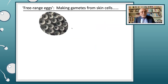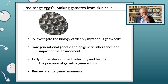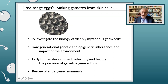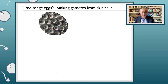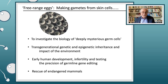So let's think about what we can call 'free range eggs' — say we can make these gametes from skin cells. What is the motivation for pursuing this research? I think there are four key points. First, this would allow us to investigate the biology of what Anne called 'deeply mysterious' germ cells, especially in humans, where germ cells are not accessible. There are other aspects like transgenerational genetic and epigenetic inheritance, and the impact of environment — particularly on epigenetic modifications — and how this could influence germ cell development.